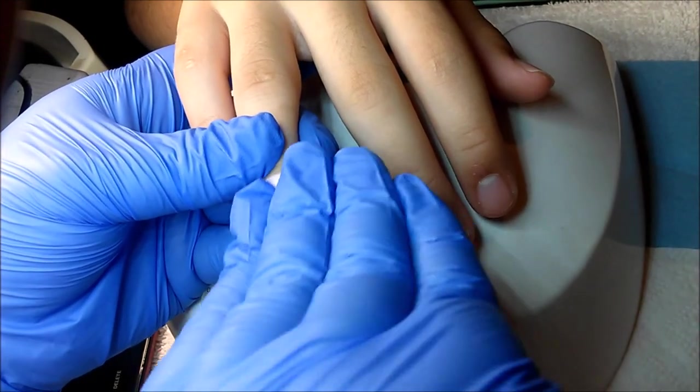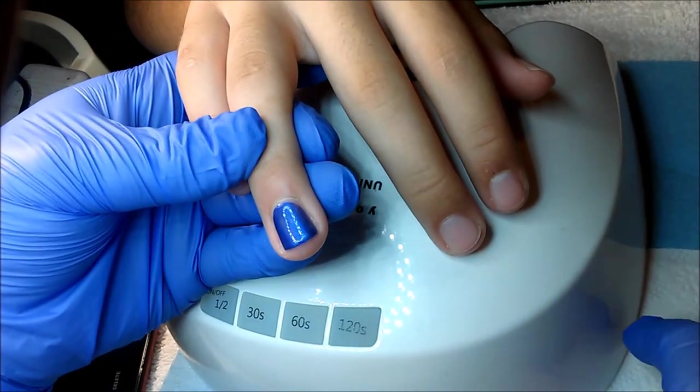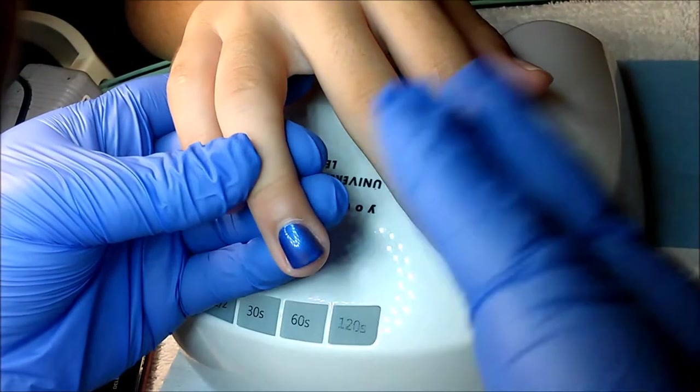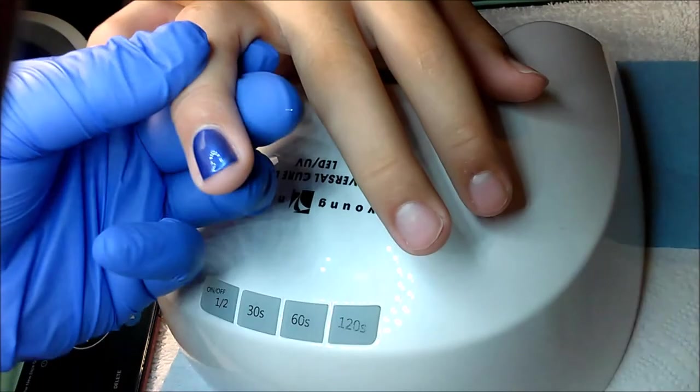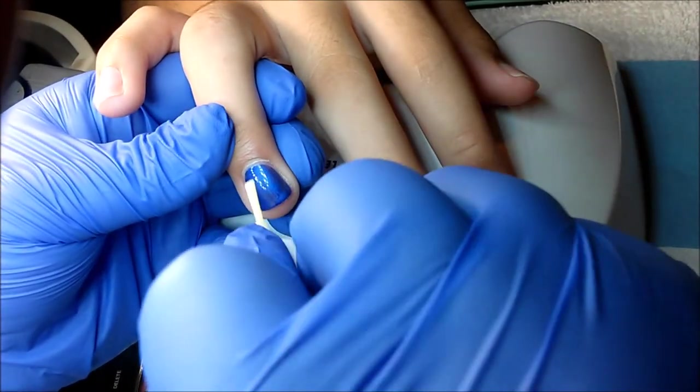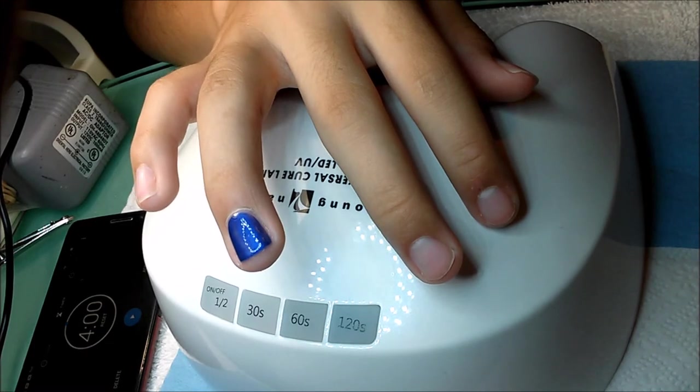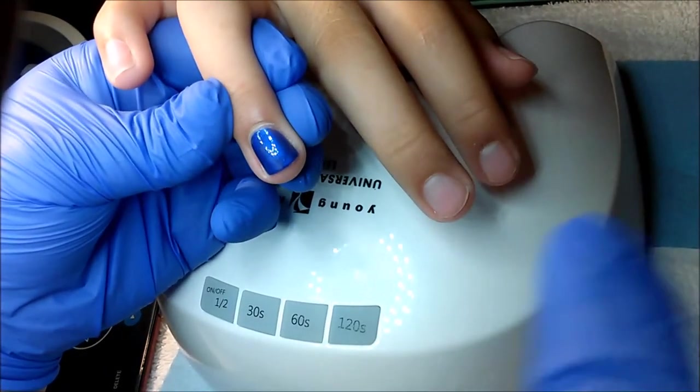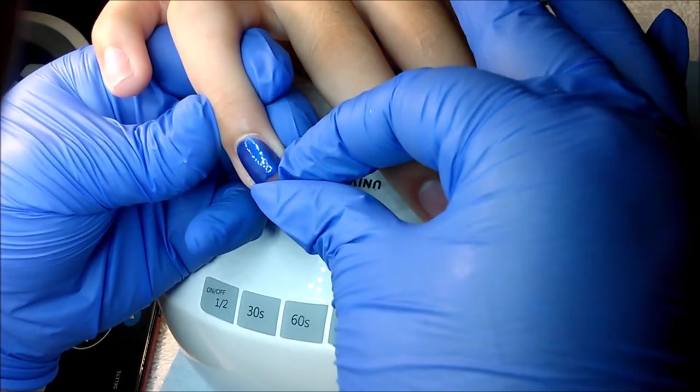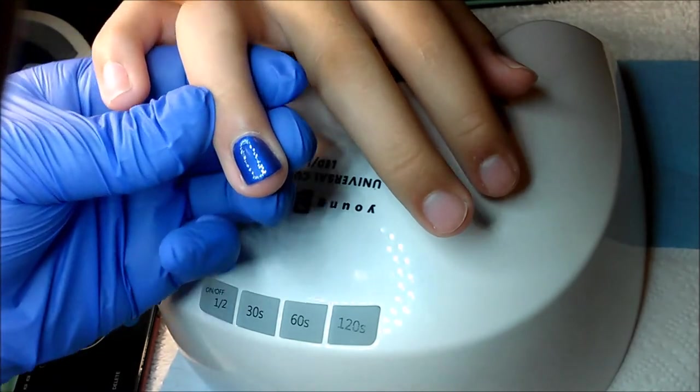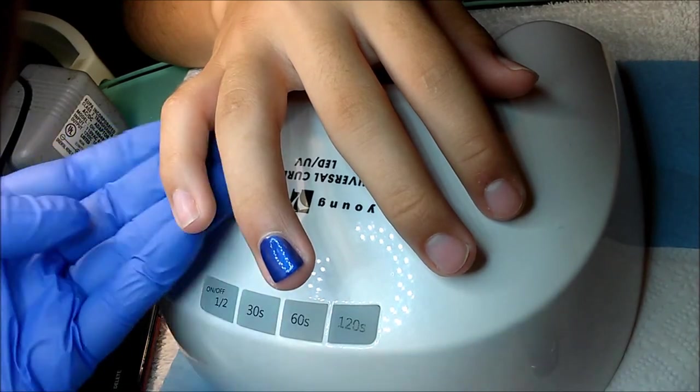Okay. Again, wipe off the inhibition layer. And then once again, you're going to go in with your protein bond. And with protein bond, you want to give it just a little bit of time to air dry. Okay. Now I'm going in with my second coat of color.